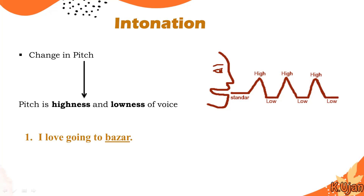For example, in the sentence 'I love going to the bazaar,' when we lower our voice, that is falling intonation — shown with a downward arrow symbol. In another sentence, 'Are you happy?' — we raise our voice on 'happy,' showing a rising intonation with an upward symbol.